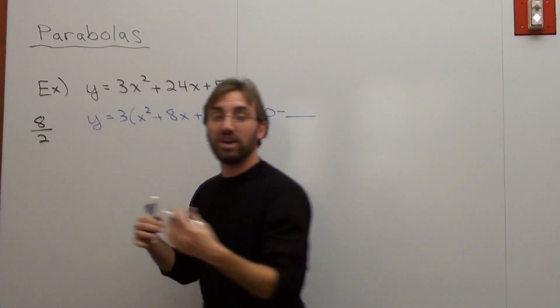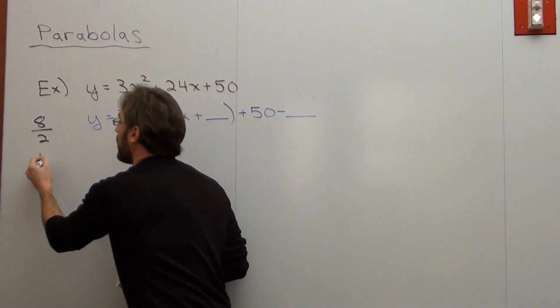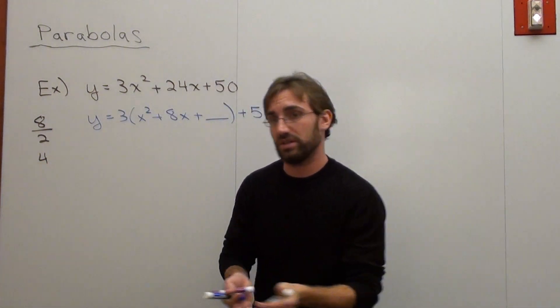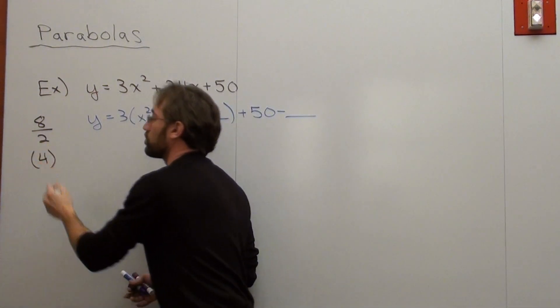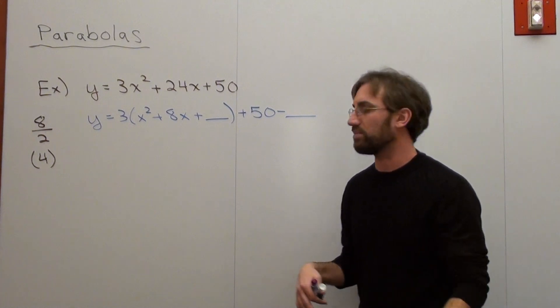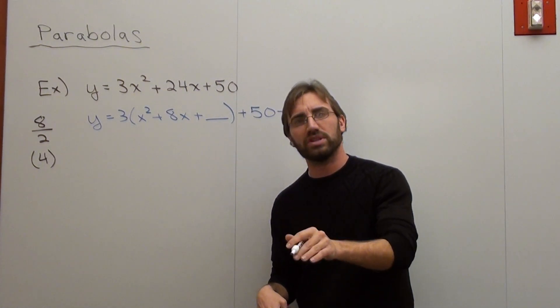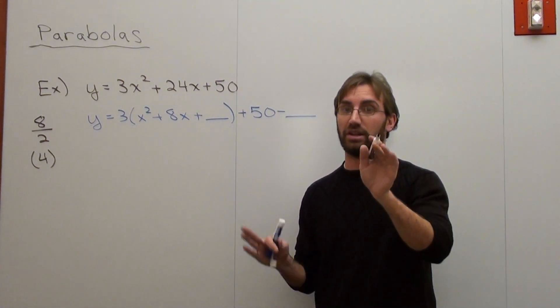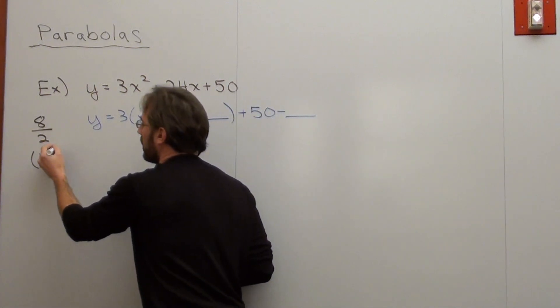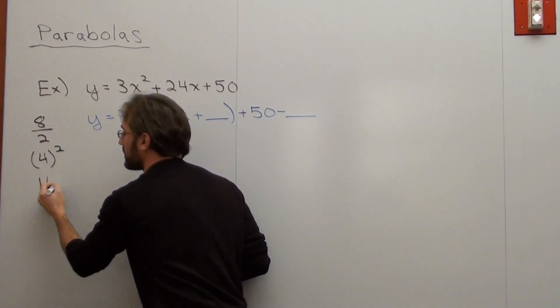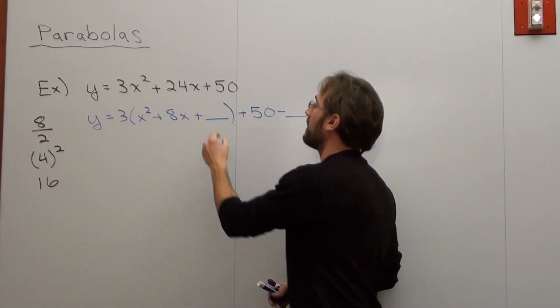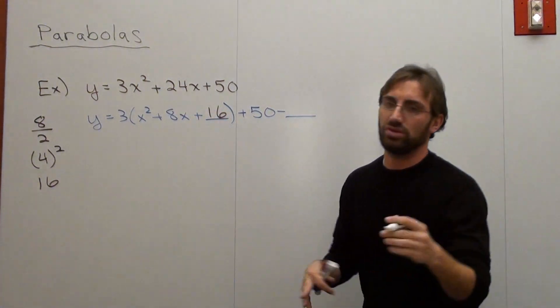And that's what I do. Now 8 divided by 2 comes out to 4. What I tell my students is put that in parentheses. Because the next thing you're going to do is square it. Put it in parentheses because it's going to be a lot easier for you in the end. Trust me. So 4 squared equals 16. So the number that I put into this blank spot is 16.